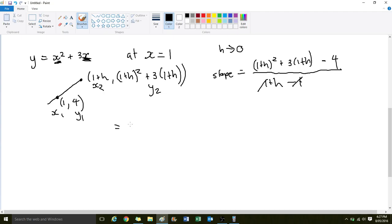So, what we have is 1 plus 2h, plus h squared. That's from expanding this first bracket here. And then we're going to have plus 3, plus 3h, and take away 4. And all that is divided by h.